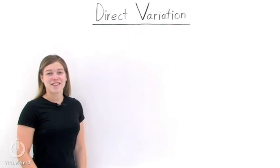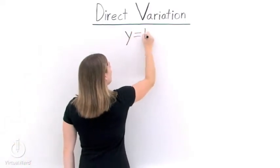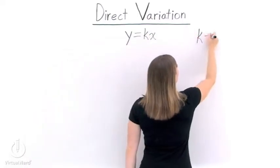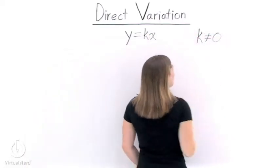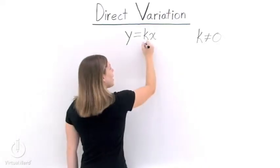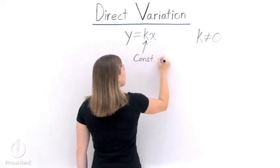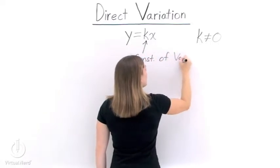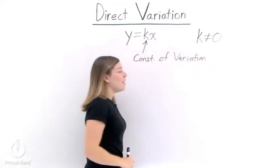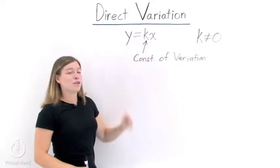What is direct variation? Direct variation is defined by this formula: y equals k times x, where x and y are any two variables, and k is a constant that does not equal 0. k has a special name — it's called the constant of variation. It's a constant that helps us determine what x and y are. Notice that as x increases in our formula, so does y.